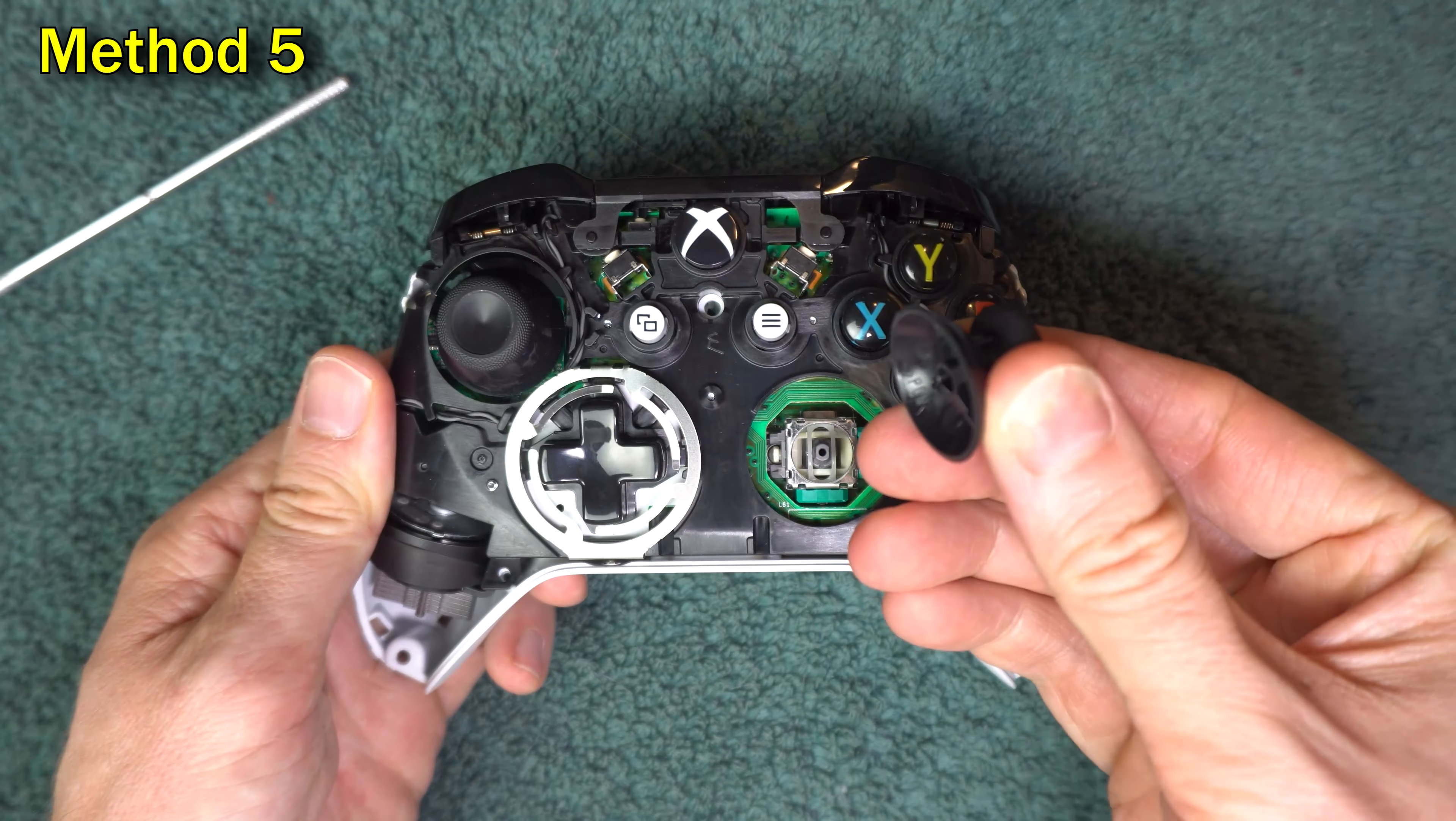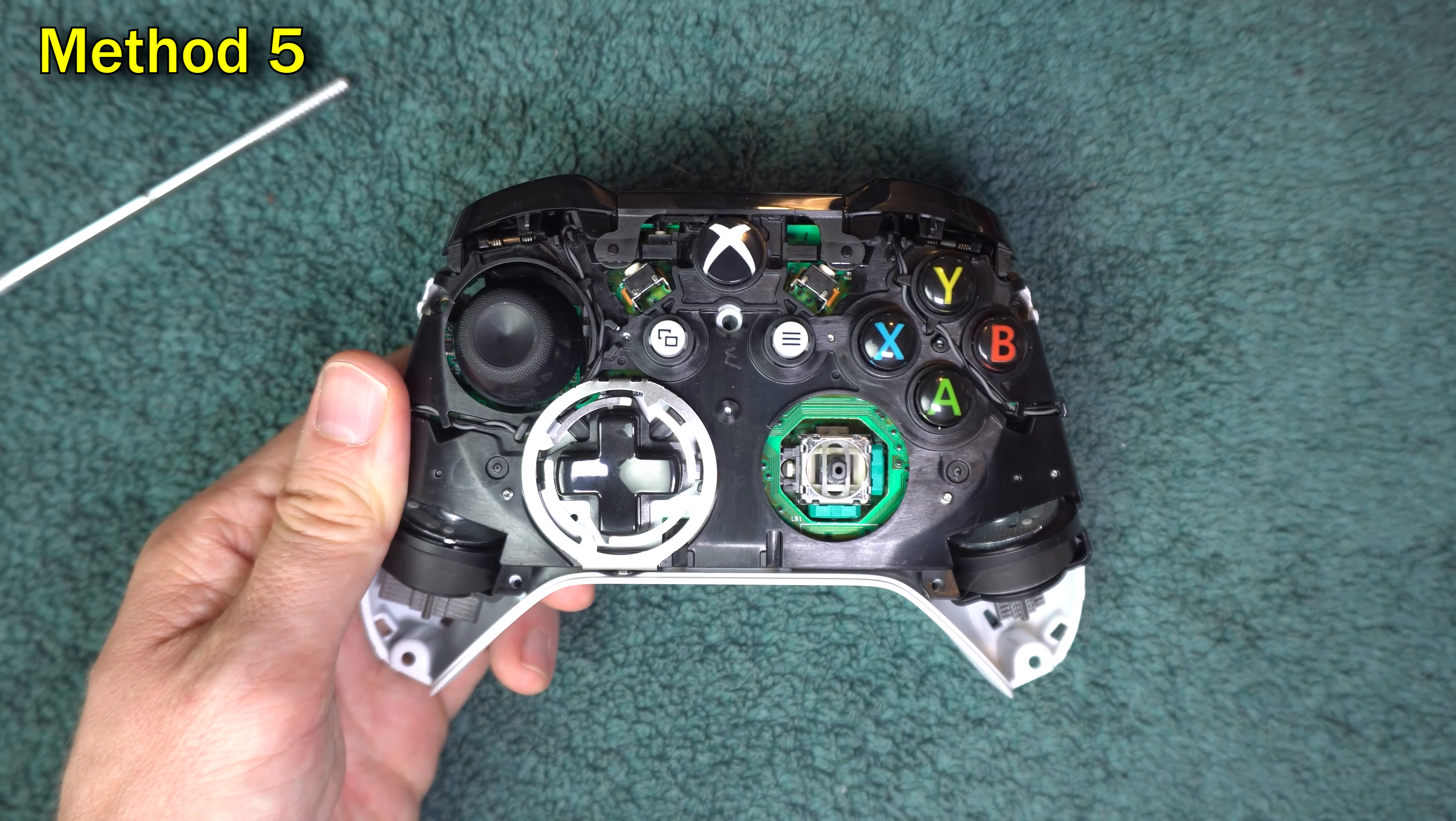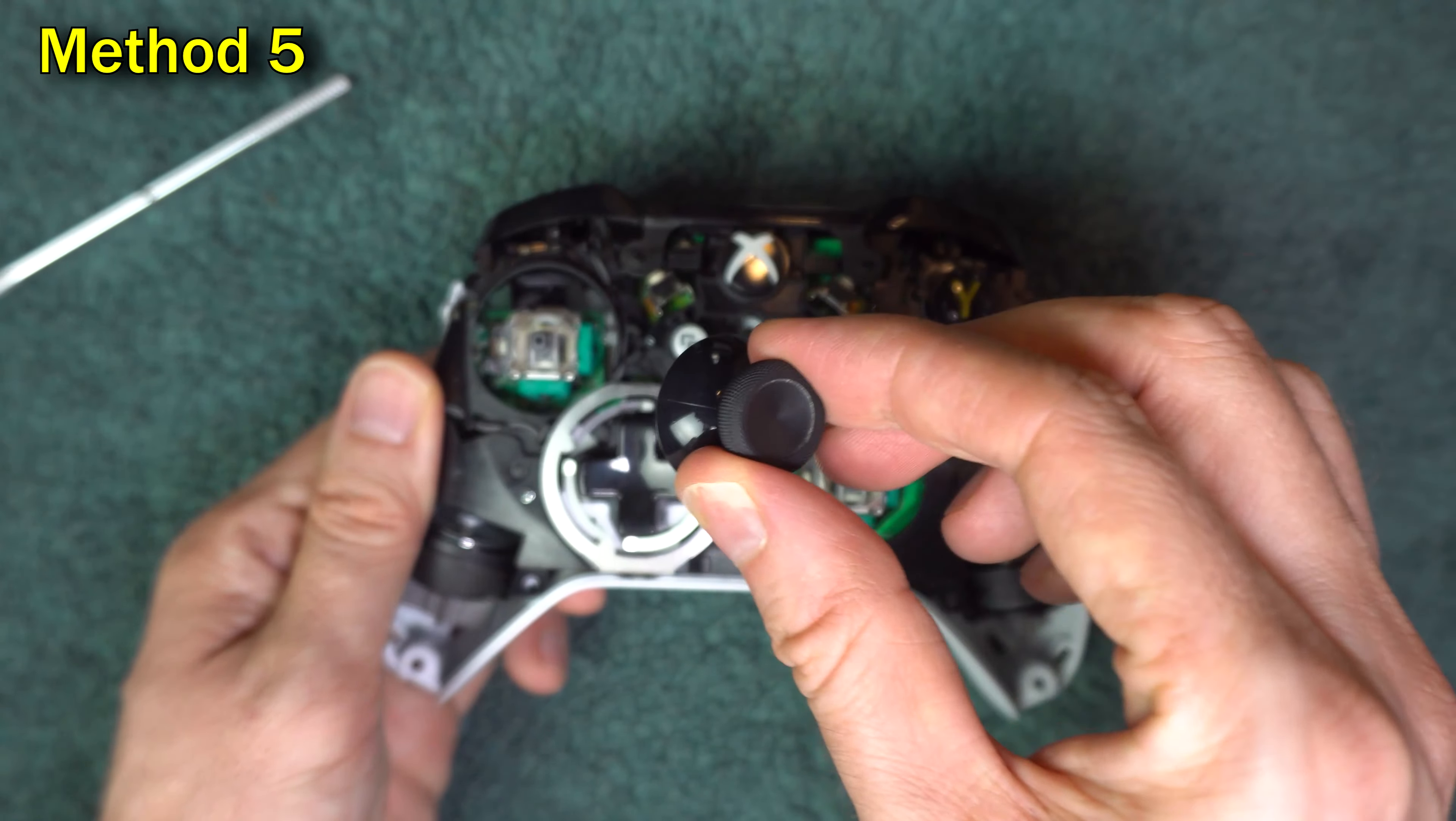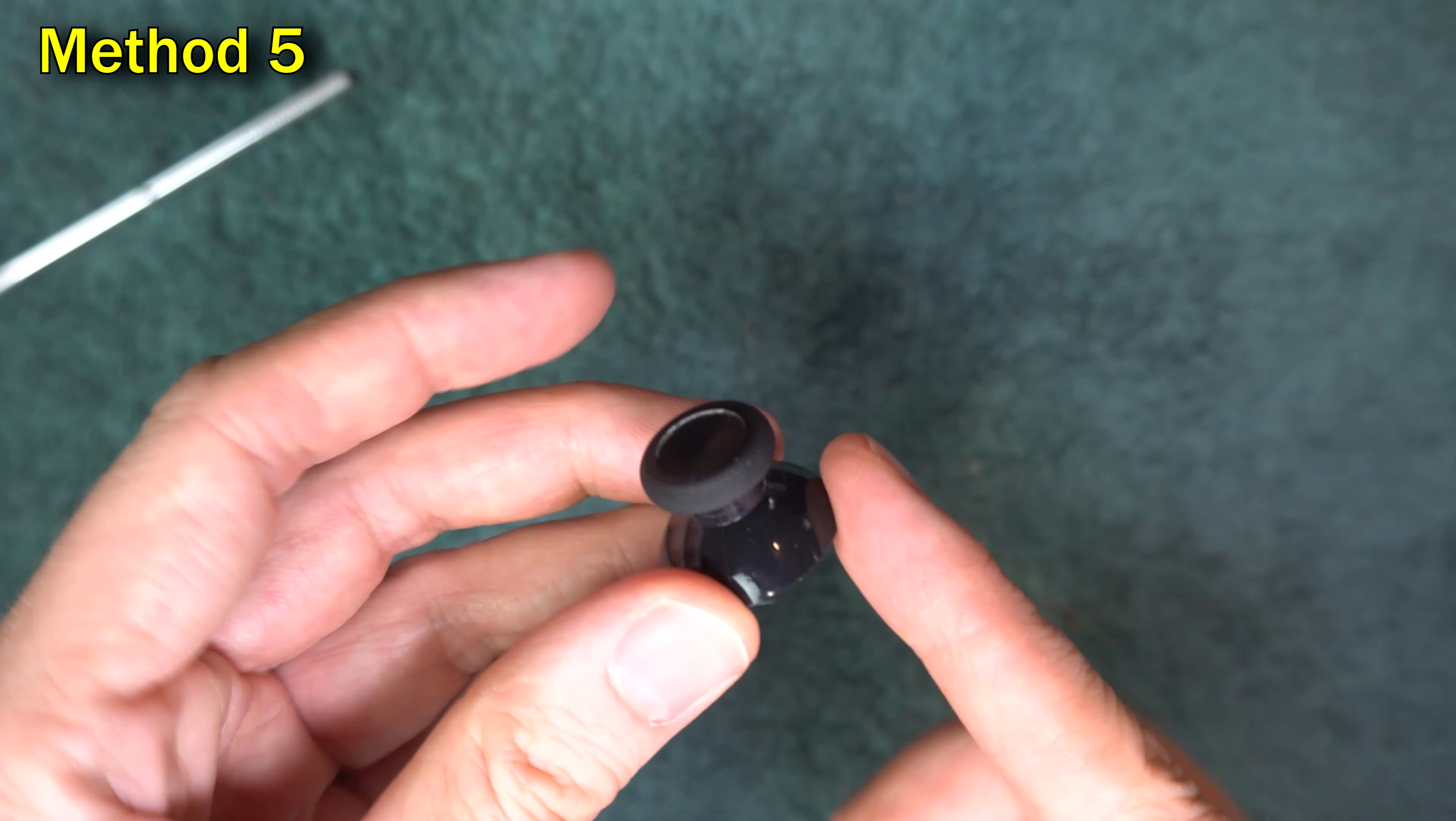Then pull off the analog sticks. Even if only one of them is giving you an issue, you may want to do this cleaning on both of them. If the knob looks dirty, wash it under a sink.